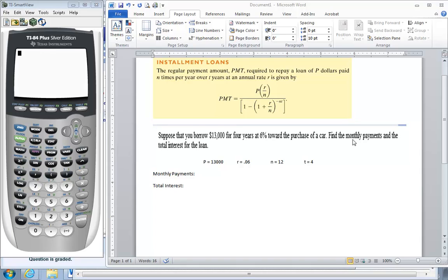N is how often we're making payments, monthly payments. There are 12 months in a year. T is the amount of time that we're paying the loan over, which is 4 years.